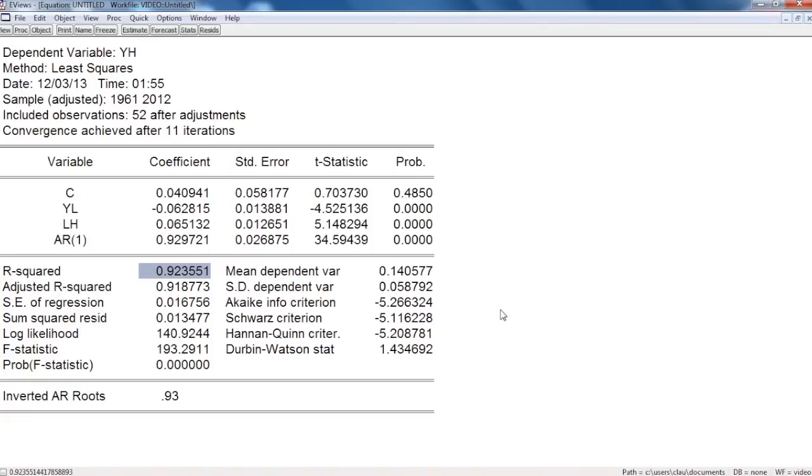It's of 92%, which means that 92% of the model is explained by the independent variables.